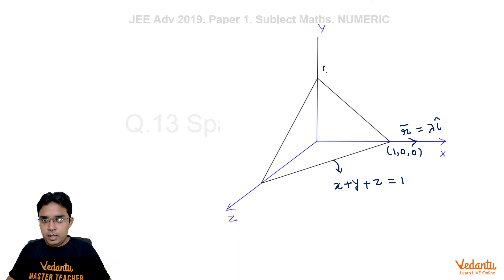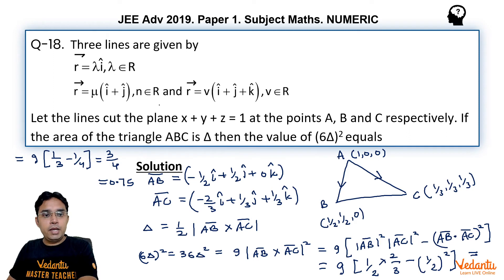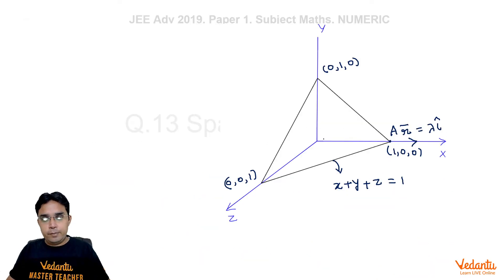You can see by checking x, y, z intercepts also. This would be 0, 1, 0 and this one would be 0, 0, 1. So this line R equal to lambda i which is along x axis is going to intersect this plane at this point A only which is 1, 0, 0. Our second line was R equal to mu times i cap plus j cap which should be lying in x, y plane and it should also be a bisector of angle between x axis and y axis because i and j have equal coefficients. So which means this line will intersect the portion of this plane between this x axis y axis in the plane x, y at their midpoint.